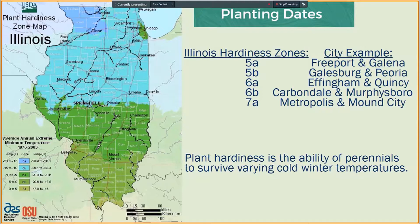Plant hardiness is the ability of perennials to survive varying cold winter temperatures. In Illinois, there are five major plant hardiness zones as seen on the map. Major plant hardiness zones are formed based on weather and climate data. You can also have microclimates in your yard — areas differing from the general region due to local environmental and structural influences. These influences may raise or lower your temperature a bit.